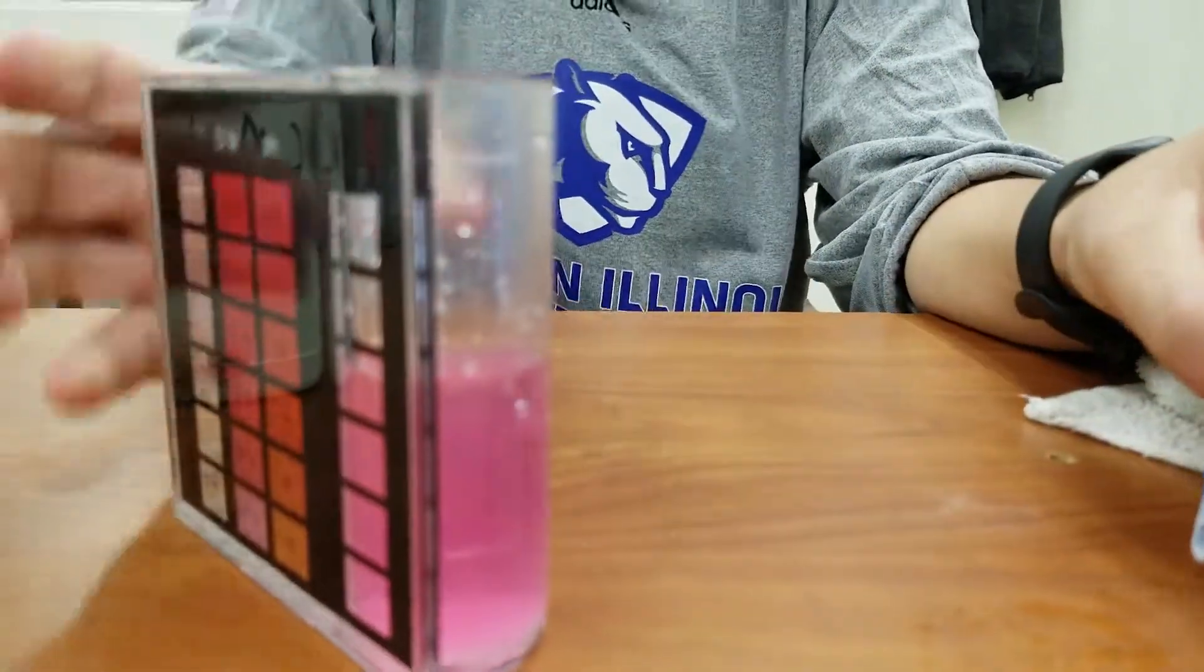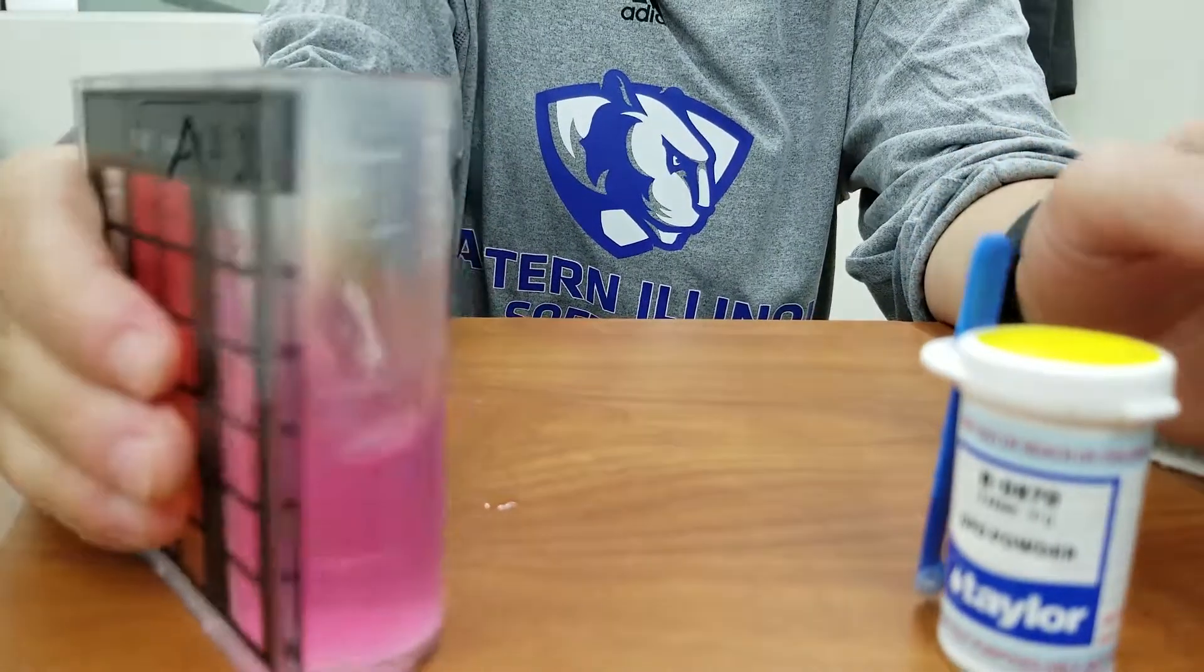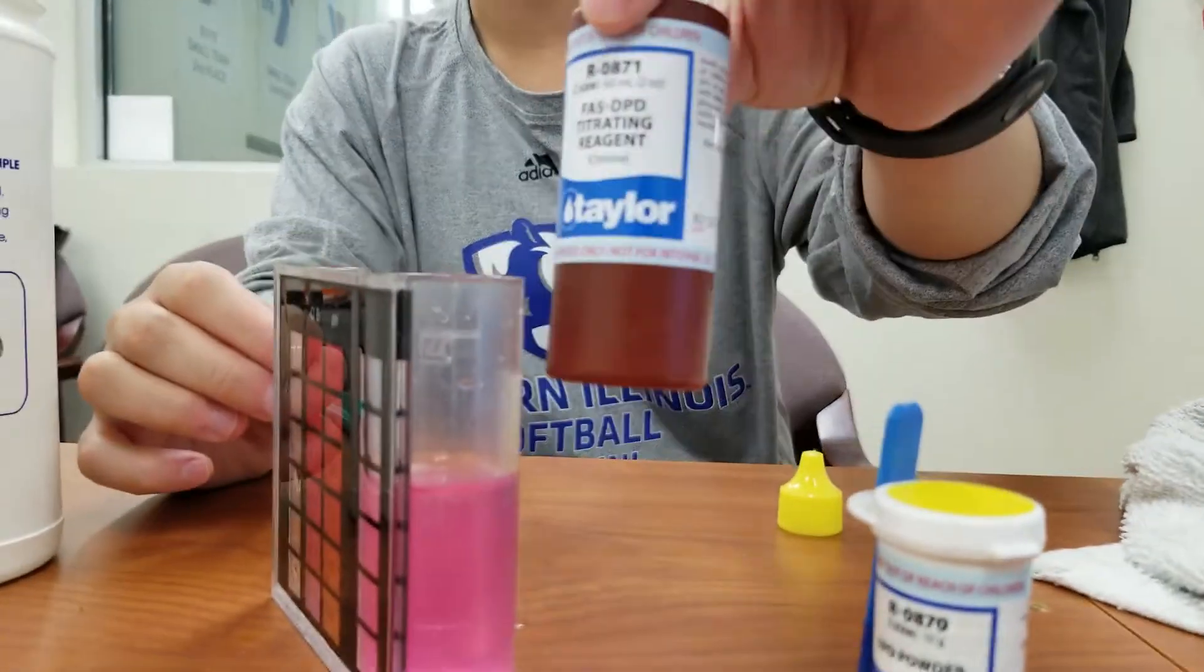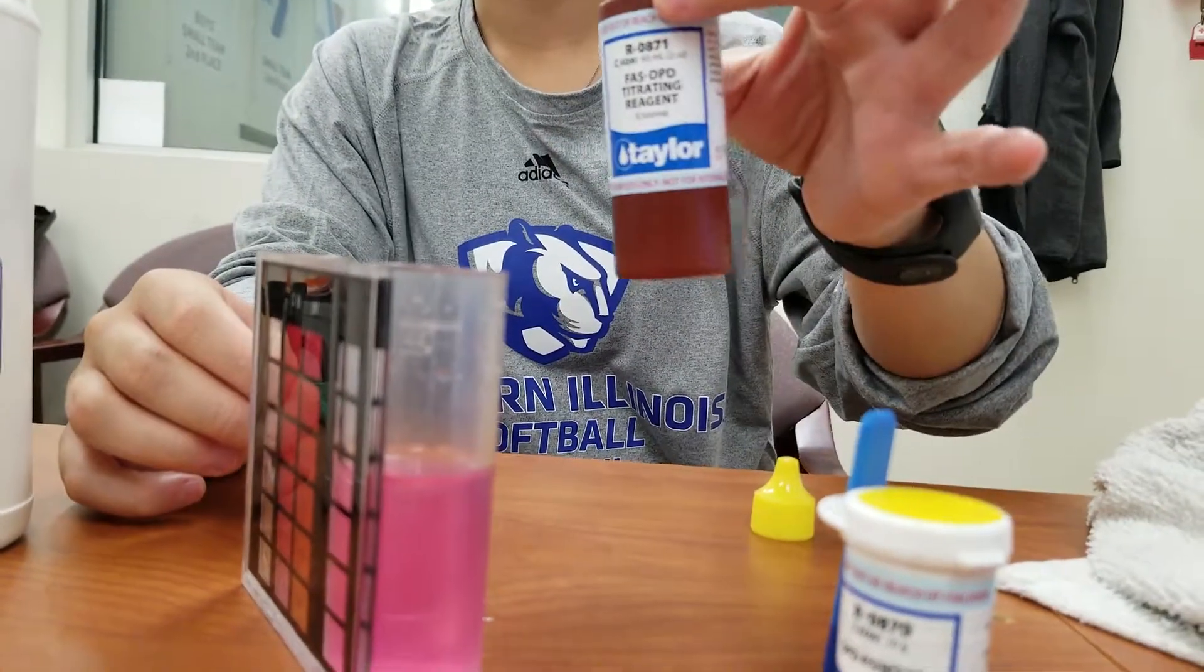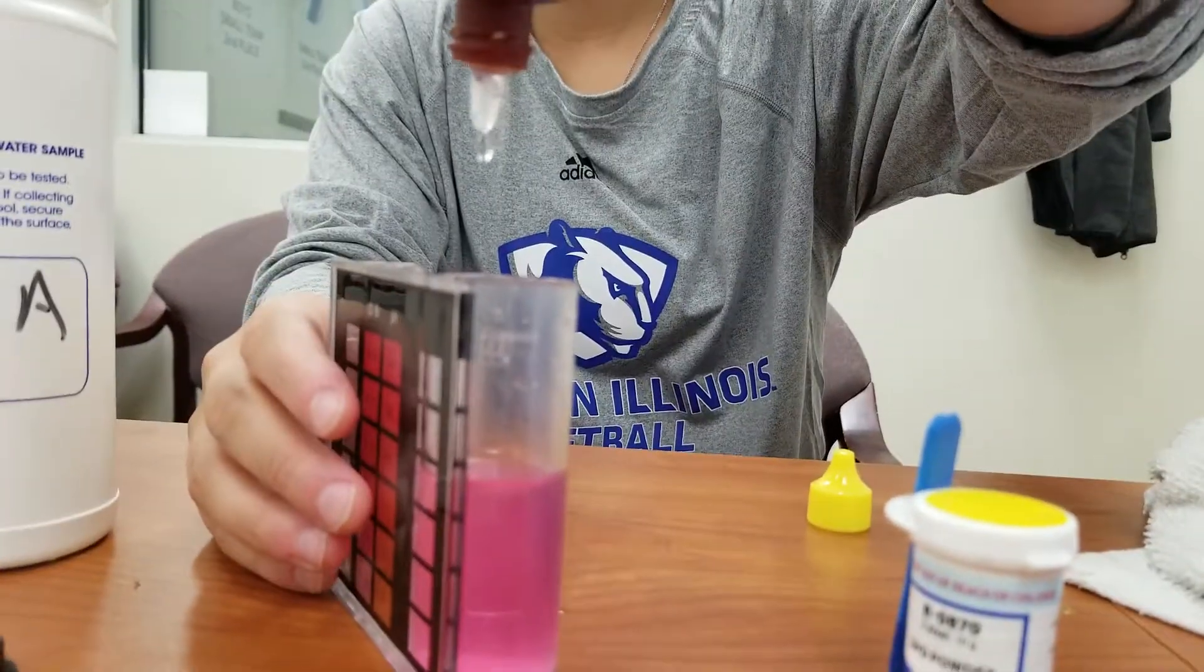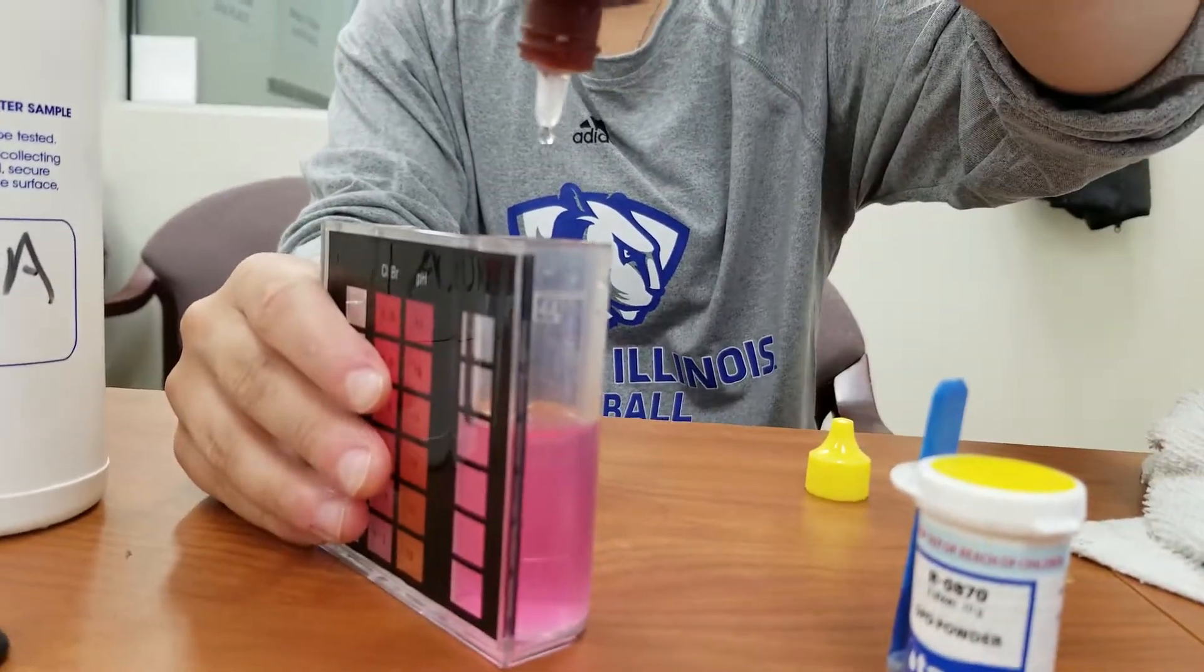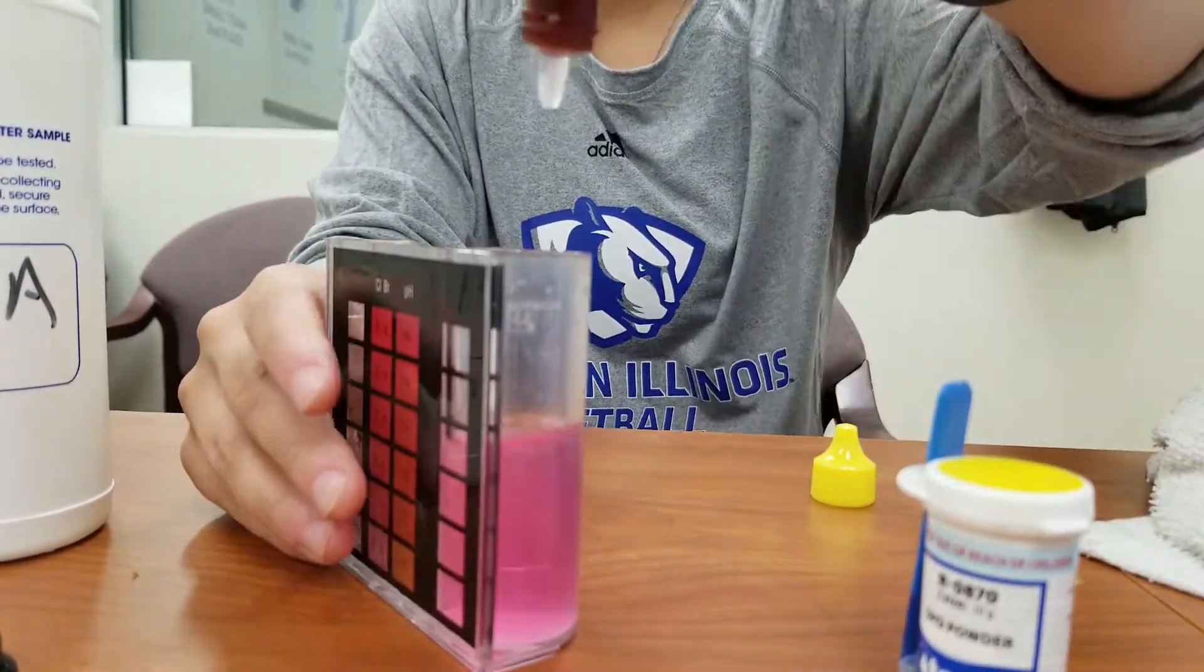So now that we've got that in there, we're going to swirl it around, and it's going to be nice and pink for us. So now here's the titration. We're going to take R0871 and we're going to add it drop-wise. So you drop one drop at a time and swirl. What we're looking for here is a complete color change.